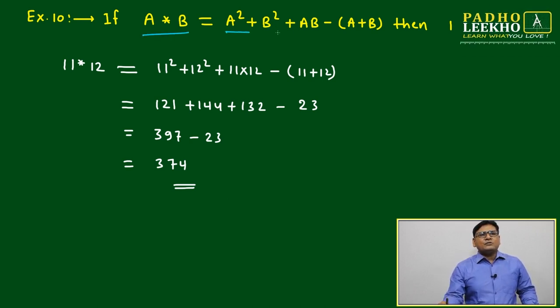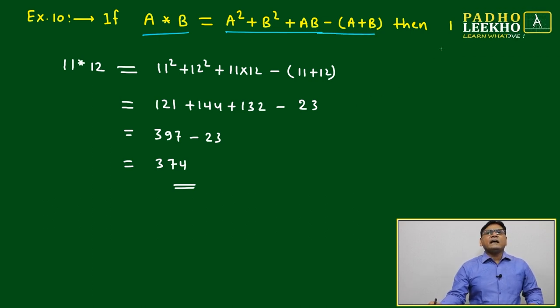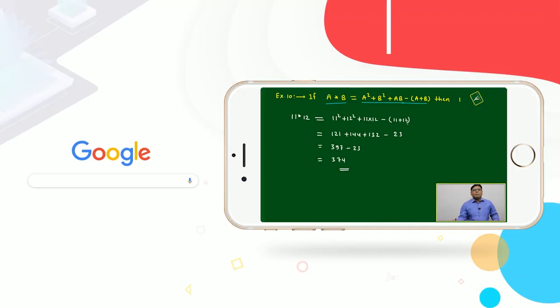If a★b = a² + b² + ab - (a+b), then 11★12 = 11² + 12² + 11×12 - (11+12).